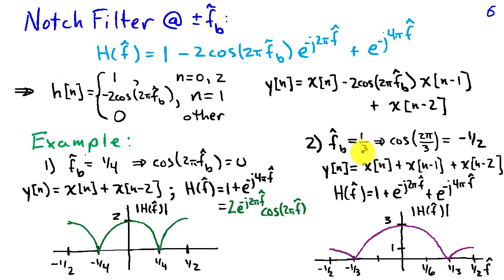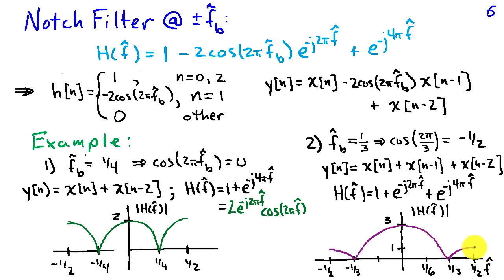For a second example, suppose I want 0 gain at frequencies of 1/3 cycles per sample. Substituting f hat sub b equals 1/3, cosine of 2 pi over 3 becomes minus 1/2, so the second term minus 2 times cosine of 2 pi f hat b becomes plus 1. Therefore y of n equals x of n plus x of n minus 1 plus x of n minus 2. Graphing the frequency response, we see 0 gain at 1/3 cycles per sample, a gain of 3 at the origin, and a gain of 1 at 1/2 cycle per sample. While this notch filter design lets you zero out any desired frequency, it doesn't ensure uniform gain at other frequencies — and that's where more sophisticated filter designs are useful.